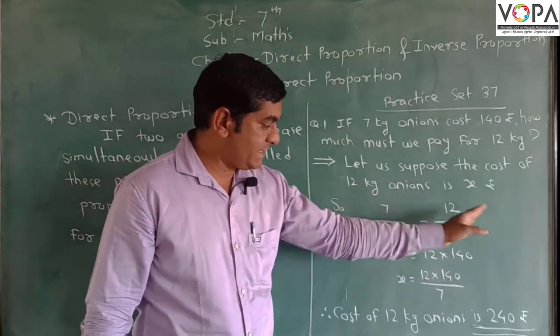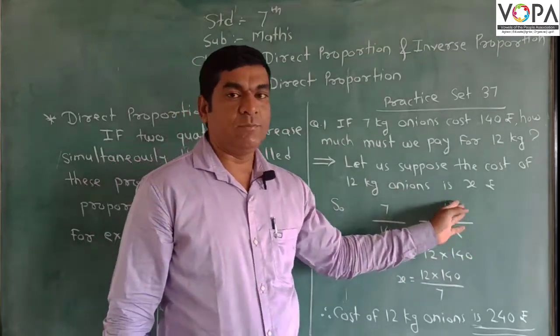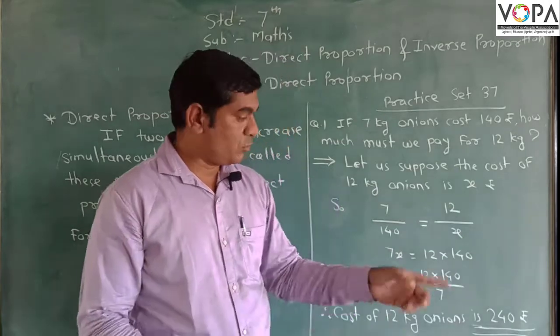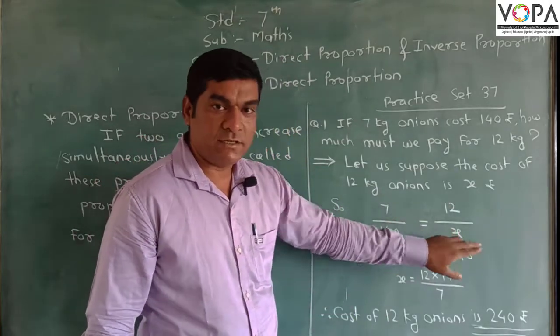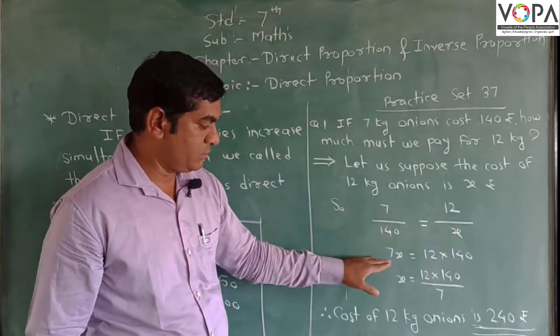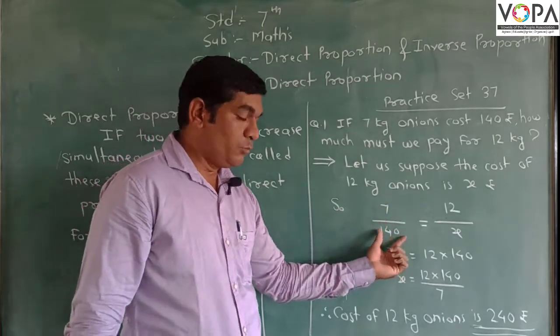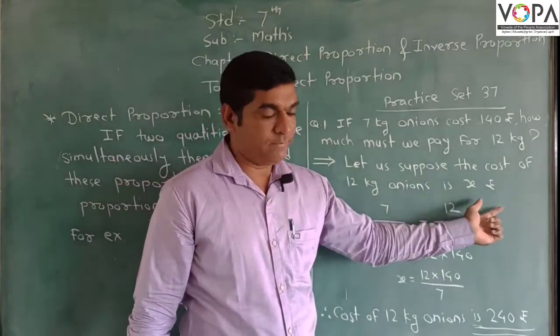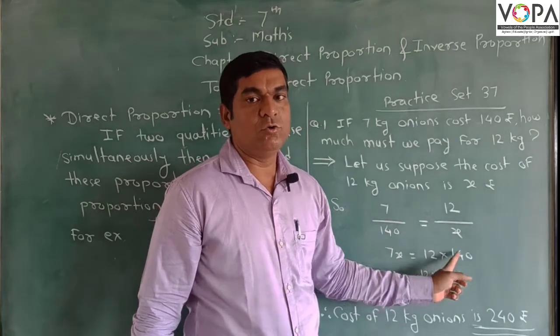So our equation is 7 upon 140 is equal to 12 upon x. Now we make a cross multiplication. Then x on the side becomes multiplied, so it becomes 7x. 140 on the side becomes multiplied, which means 12 into 140.